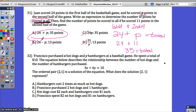Number 32. Francisco purchased X hot dogs and Y hamburgers at a baseball game. He spent a total of $10. The equation below describes the relationship between the number of hot dogs and hamburgers purchased. What I like to do is take this information and label it on that equation.